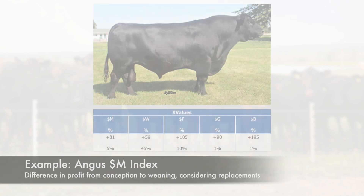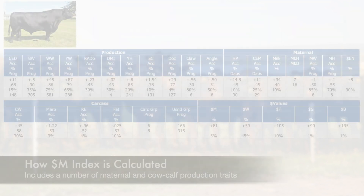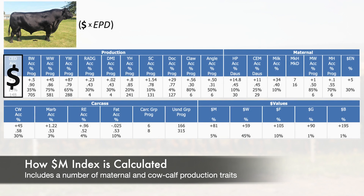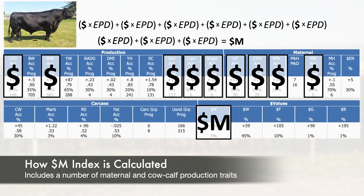Another example from the American Angus Association is the recently introduced $M, a maternal weaned calf value index designed to represent profitability from conception to weaning of their calves, considering some of the female calves will become replacements in the herd and go on to have calves of their own in future generations. This index includes nine traits important to today's cow-calf producers, emphasizing lower mature cow size while improving functional traits like heifer pregnancy, docility, foot score, and foot angle.